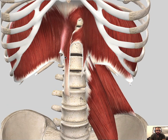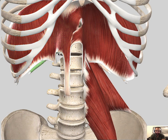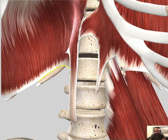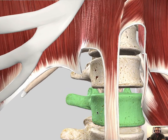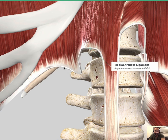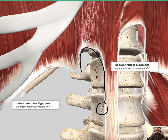The right and left crura normally have two tendinous ligaments called the medial and lateral arcuate ligaments. The medial arcuate ligament passes above the psoas major muscle. It typically originates from the body of L2 and inserts at the transverse process of L1.